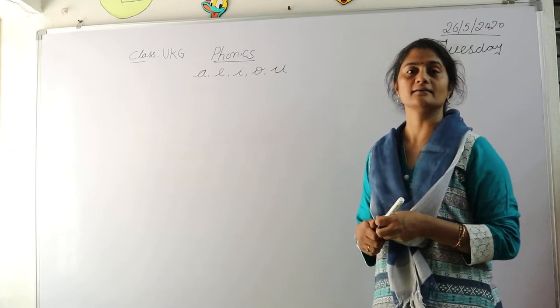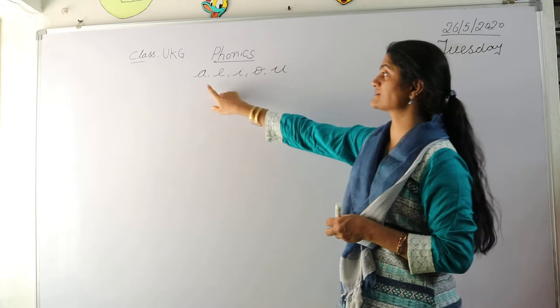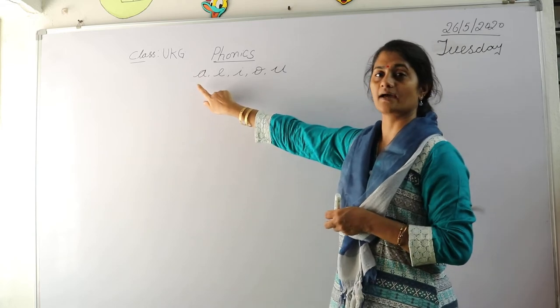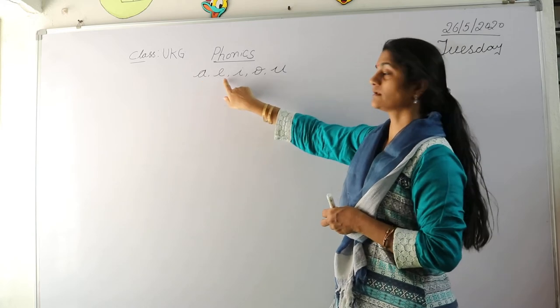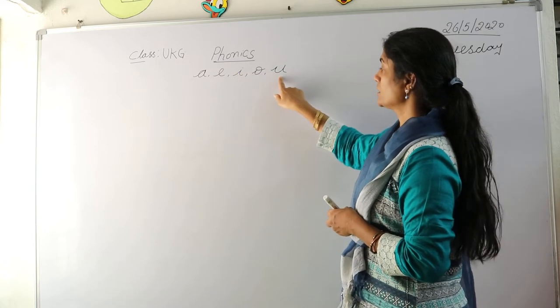How many vowels are there? There are 5 vowels. What are they? They are A, E, I, O, U.